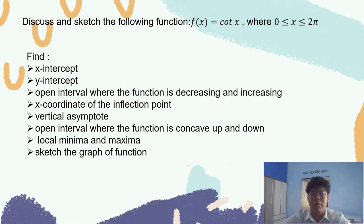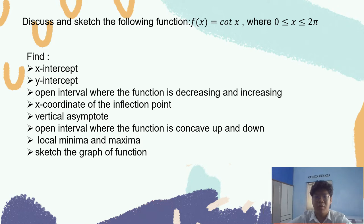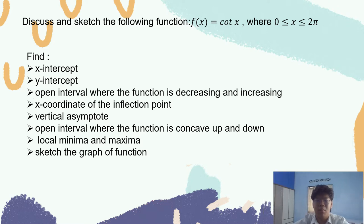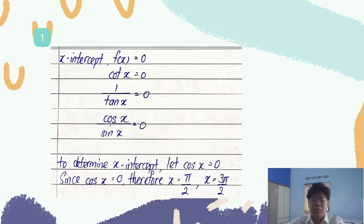Before sketching the graph, we need to find the x-intercept, y-intercept, the open interval where the function is decreasing and increasing, the x-coordinate of the inflection point, the vertical asymptote, the open interval where the function is concave up and concave down, and finally the local minimum and maximum.